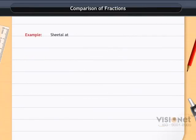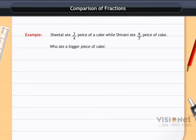Example: Sheetal ate 3 by 4 piece of a cake while Shivani ate 6 by 7 piece of cake. Who ate a bigger piece of cake? Solution: Here, both the fractions are unlike.